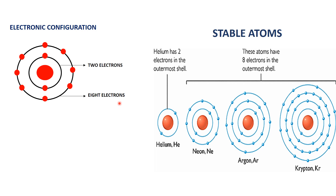Now students, an atom cannot exist independently. It is a particle that takes part in a chemical reaction to form new substances or compounds. Now some elements like helium, neon, and argon do not participate in any chemical reaction. These types of elements are described as unreactive or stable atoms. They are stable because their outermost shells are complete, which makes an atom stable.